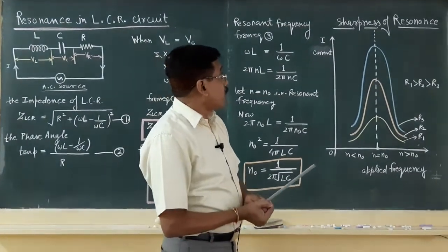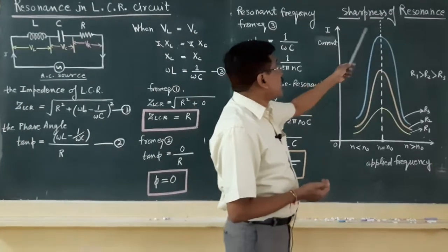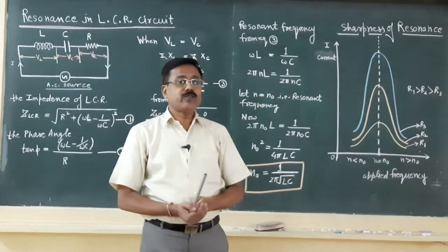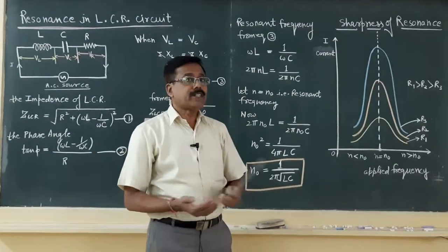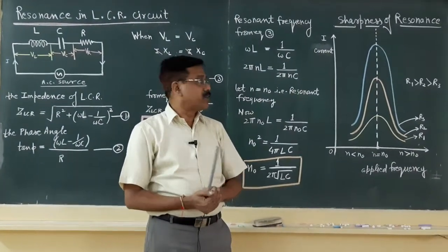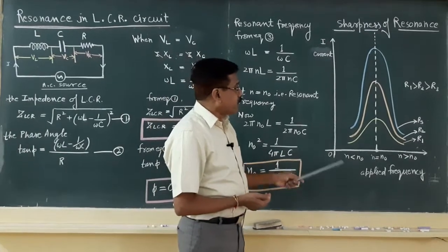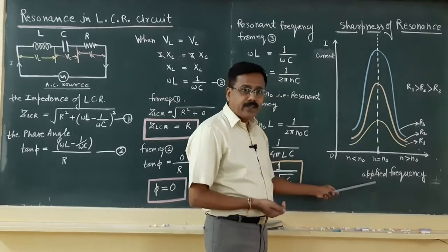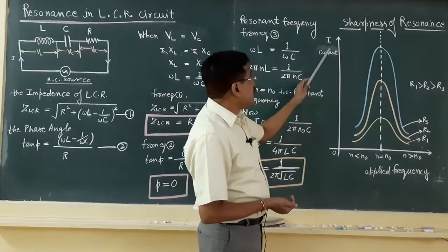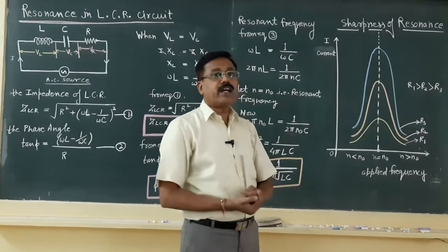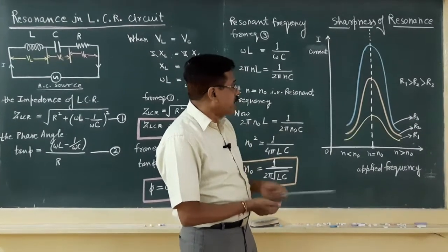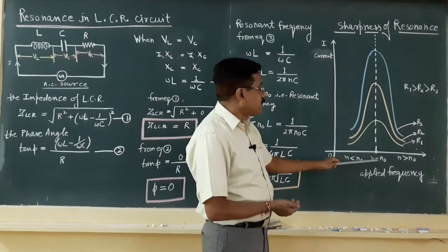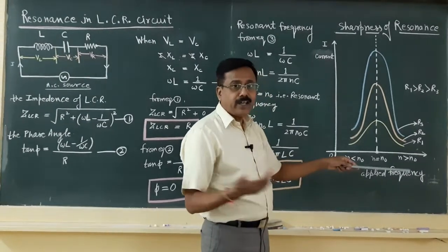Now you come to the concept of sharpness of resonance, means the intensity of resonance in terms of the maximum value of the current flowing through the circuit. In this graphical explanation, along x-axis we have the applied frequency, along y-axis we have the current flowing in the LCR circuit. Very clearly you can say that at this dotted line point we have frequency N equals N_0, that is the resonant frequency.